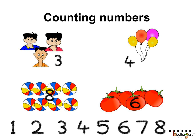The numbers we use to count are called counting numbers like 1, 2, 3, 4 and so on. The counting numbers are also known as natural numbers.